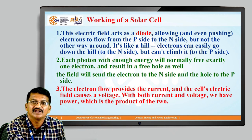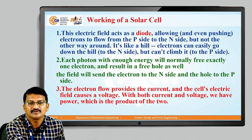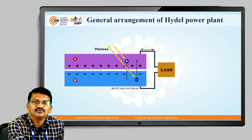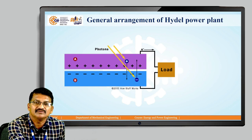This electric field acts as a diode, allowing and even pushing electrons to flow from the p-side to the n-side but not the other way around. It is like a hill — electrons can easily go down the hill to the n-side but cannot climb it to the p-side. Each photon with enough energy will free exactly one electron and result in a free hole as well. The field sends the electron to the n-side and the hole to the p-side. The electron flow provides the current and the cell's electric field causes a voltage. With both current and voltage we have power, which is the product of the two.